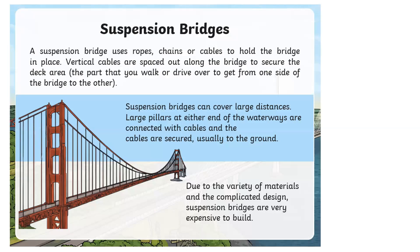Suspension bridges: a suspension bridge uses ropes, chains, or cables to hold the bridge in place. Vertical cables — that's the cables going down — are spaced out along the bridge to secure the deck area, the part that you walk or drive over to get from one side to the other. Suspension bridges can cover large distances. Large pillars at either end of the waterway are connected with cables, which are secured usually to the ground. Due to the variety of materials and the complicated design, suspension bridges are very expensive to build.